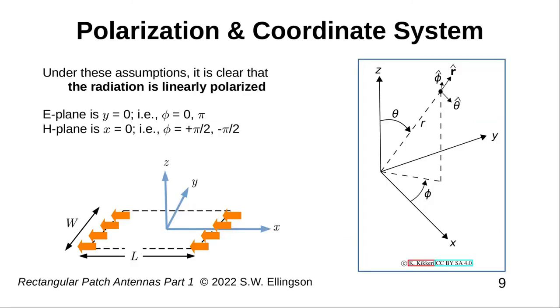Note that we are now able to see that this antenna will produce radiation which is primarily linearly polarized. To see this, simply note that the current is pointing in the same direction. And further, note that all the current is confined to an area, that is, the area of the patch, which is roughly a half wavelength across.